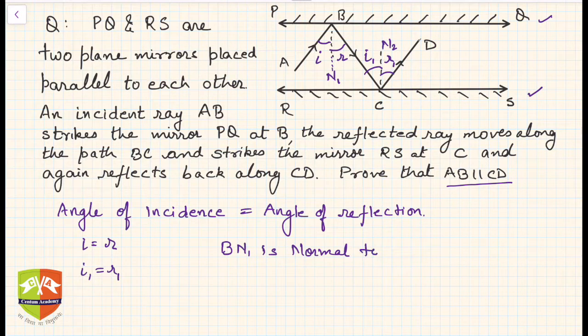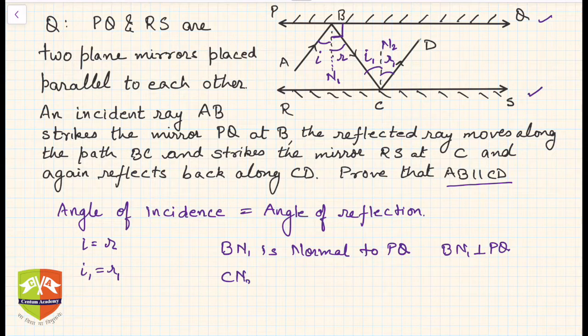What is a normal? Normal makes an angle of 90 degrees with the surface, so this is 90 degrees. Hence we can write BN1 is perpendicular to PQ. Similarly, CN2 is perpendicular to RS. N1 and N2 are two points, don't get confused. CN2 is perpendicular to RS.